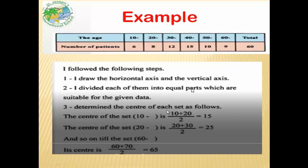10 plus 20 over 2 equals 15. Now the center of the set 20 is 20 plus 30 over 2 equals 25. And so on until the set 60. What is the next age? 60 to 70. 60 plus 70 over 2 equals 65.